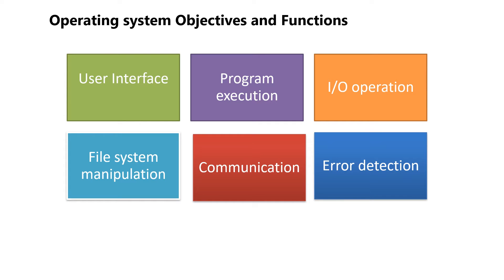Then file system manipulation. It includes creation and deletion of files. The file permissions are the operations on files and directories. Then communication — there are many cases in which one process wants to exchange information with another process. These communications are implemented via shared memory, in which two or more executing processes read and write to shared sections of memory. And the last objective is error detection. The operating system needs to be detecting and correcting errors constantly for each type of error.